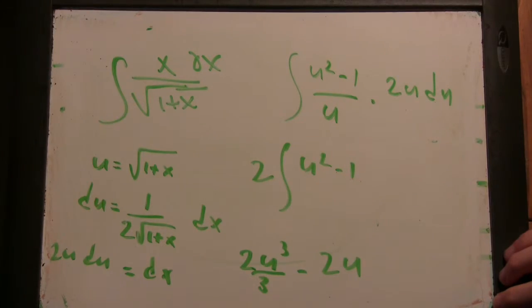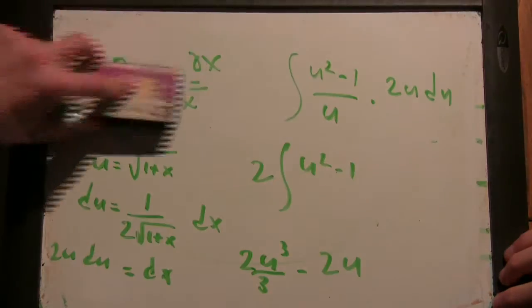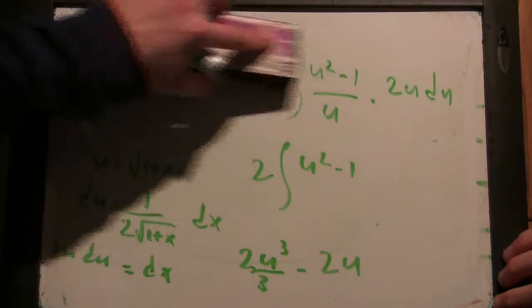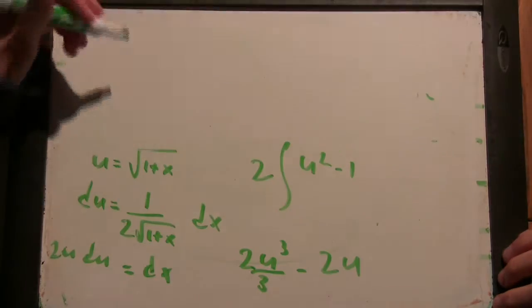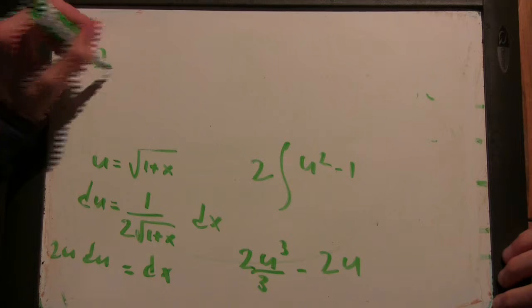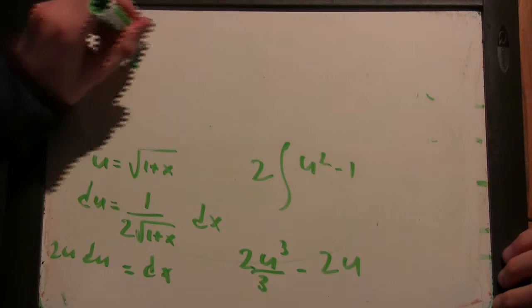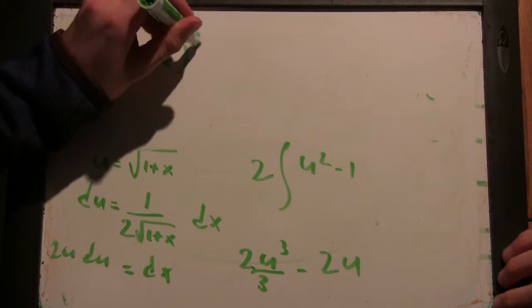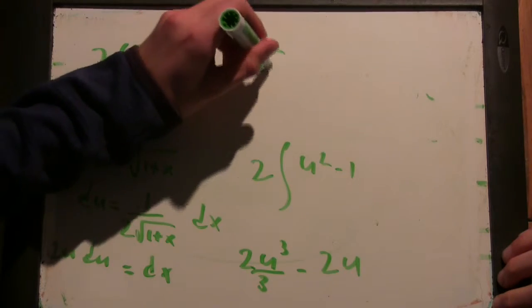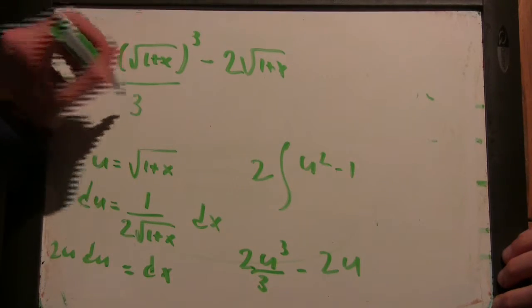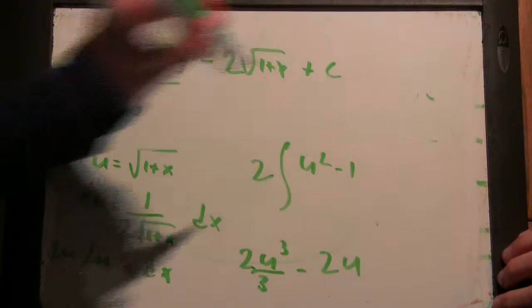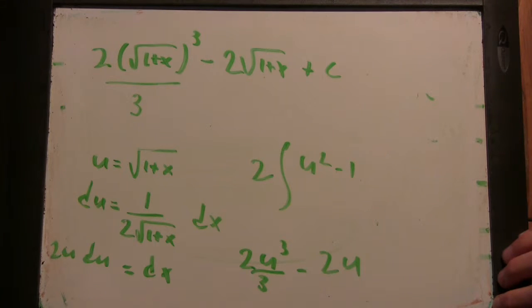Okay. So, then this turns into... It's 2, I'll just leave it as the square root of 1 plus x cubed minus 2 root 1 plus x. So, there's over 3 here. We'll see. Good. Good job.